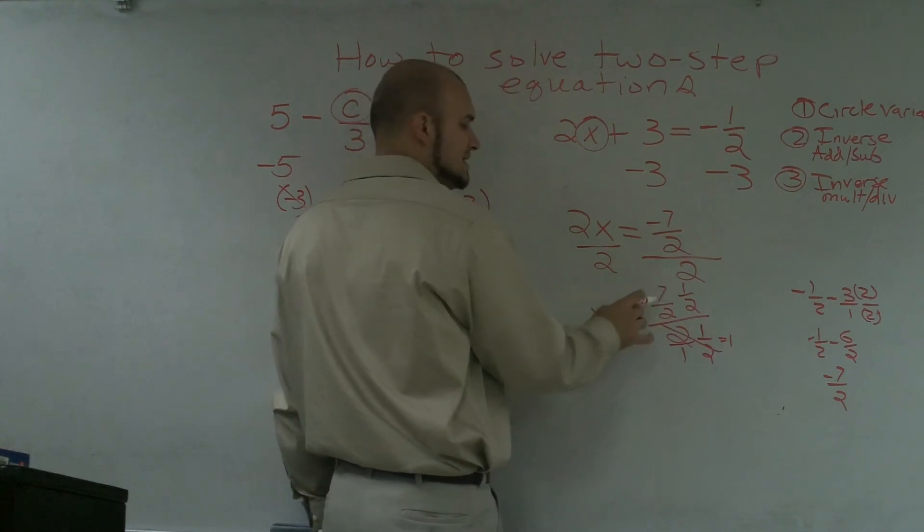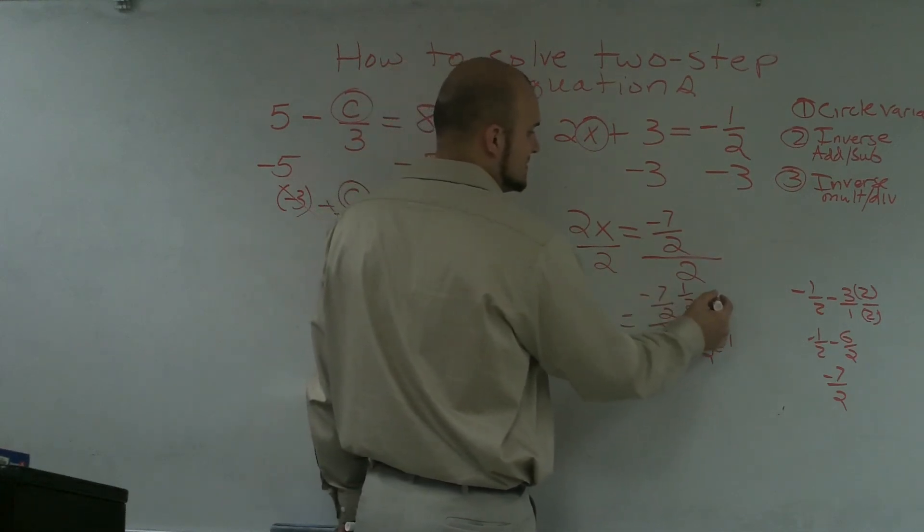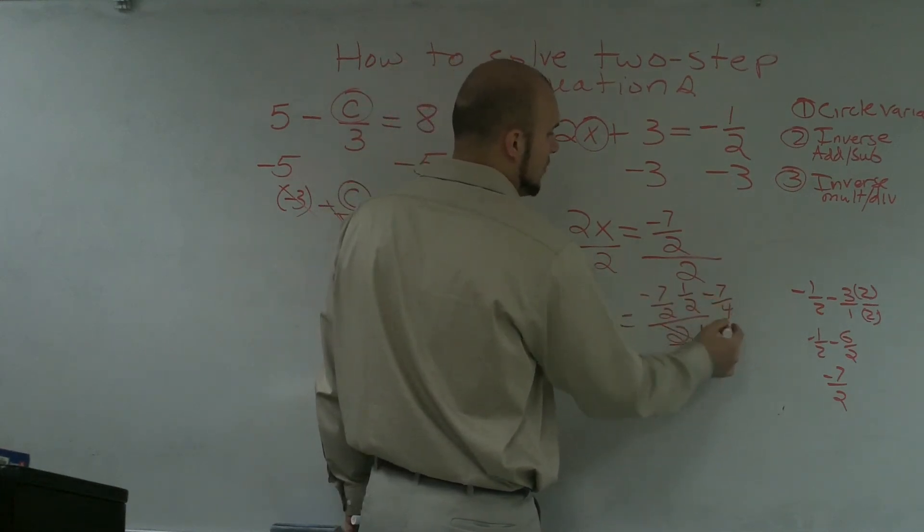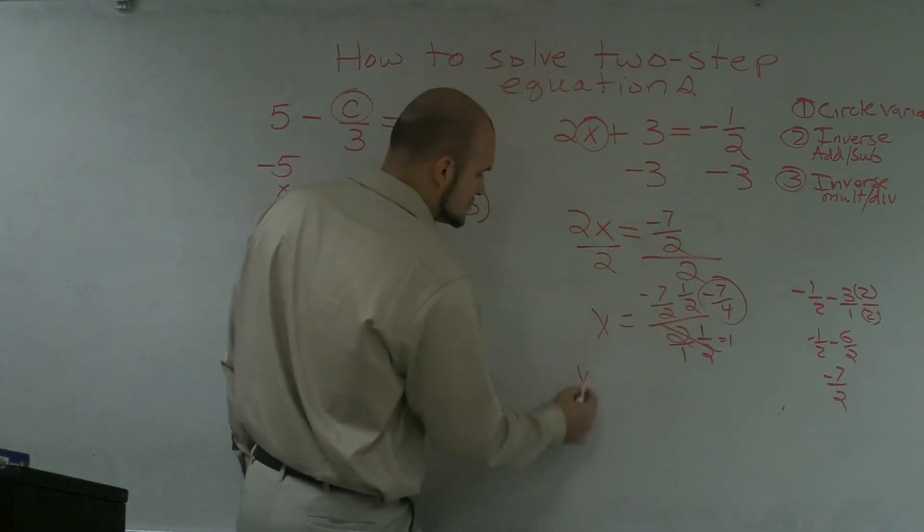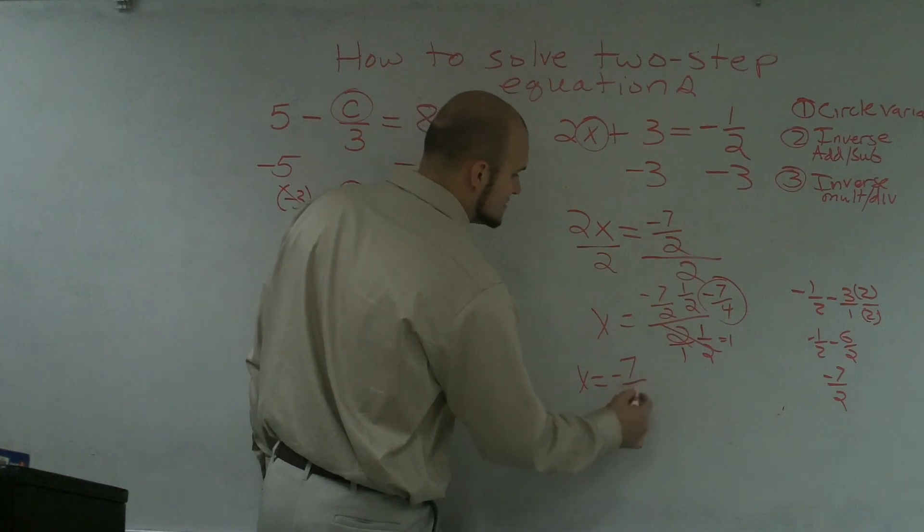And then negative 7 half times 1 half is going to give you negative 7 fourths. And that's still divided by 1, which is just going to equal negative 7 fourths. So x equals a negative 7 fourths.